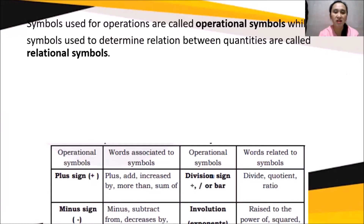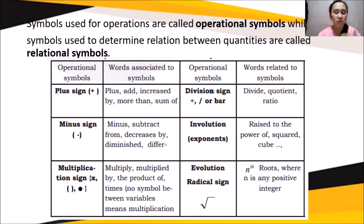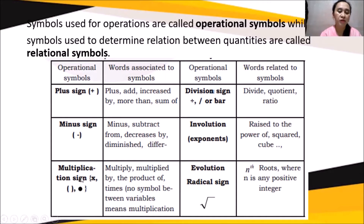These are some operational symbols and words associated with them. For the plus sign, we can use the words: plus, add, increase by, more than, or sum of. For the minus sign, we can use: minus, subtract from, decrease by, diminish, or difference. For the multiplication sign, which can be written as x, in parentheses, or as a dot, the associated words are: multiply, multiplied by, the product of, and times.